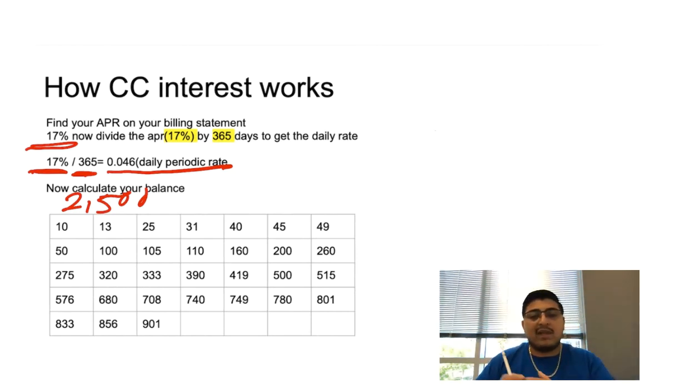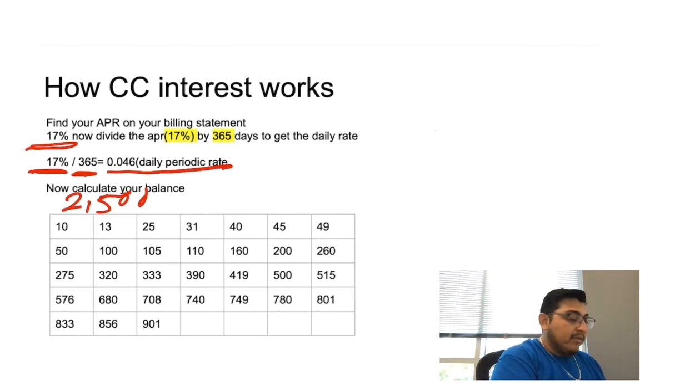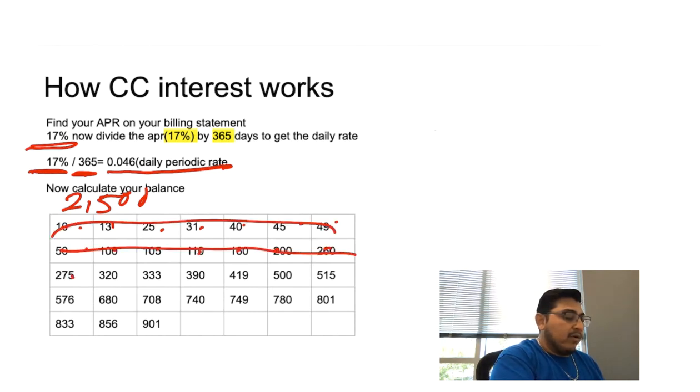Let's say that towards the end of the month, towards the middle, you started using that credit card. Let's say for the first 15 days you didn't use that credit card. So for those first 15 days, you didn't use your credit card any of these days, but you already have a balance of $2,500.